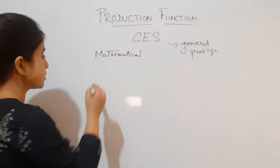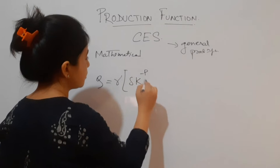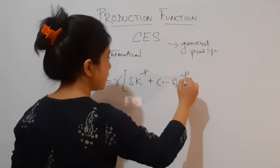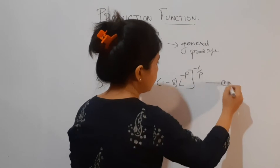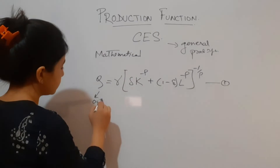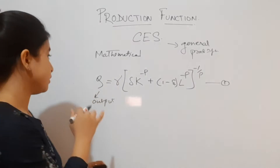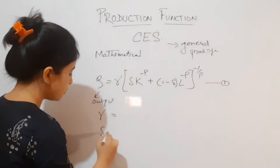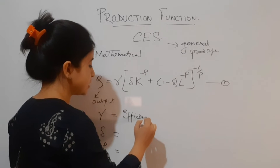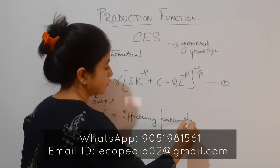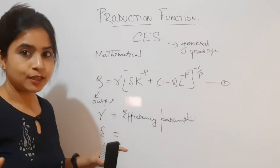Now let me move on to the mathematical depiction of this CES production function. Q is the output: Q = gamma [ delta * K^(-rho) + (1 - delta) * L^(-rho) ]^(-1/rho). Let's call this Equation 1. This production function has three parameters: gamma, delta, and rho. Gamma represents the efficiency parameter — the efficiency of the production function.